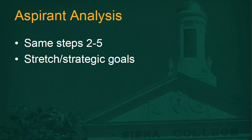For the aspirant analysis, the steps are along the same lines as your peer analysis, but you want to use data elements that are stretch goals or strategic goals for your institution. These can be better overall college ranking, faculty-to-student ratios, a higher percentage of alumni giving, and higher retention rate. Follow steps two through five and get your aspirant groups using these new variables.